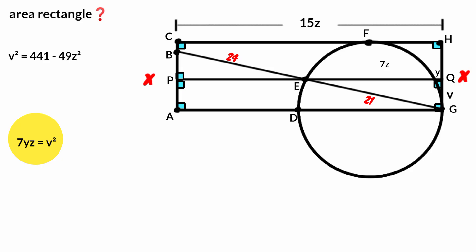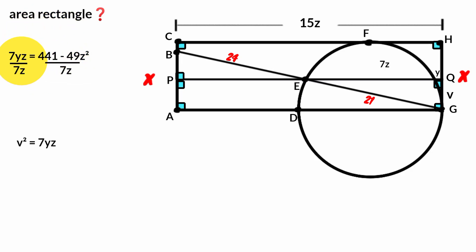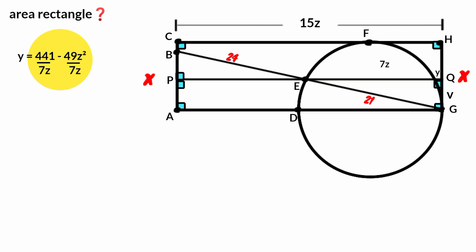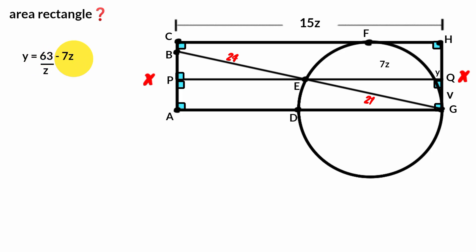So V² = 7YZ. Replace V² with 7YZ: 7YZ = 441 − 49Z². Dividing both sides by 7Z: Y = 441/(7Z) − 49Z²/(7Z), which gives Y = 63/Z − 7Z. Keep this aside.